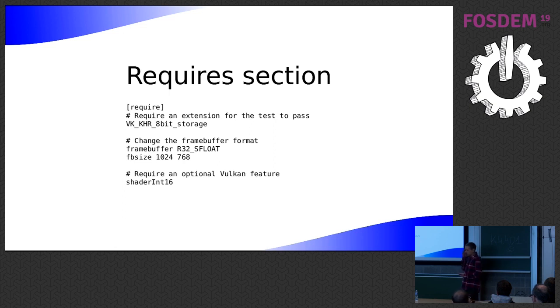But also on Vulcan, as I'm sure you know, you have to, if you want to use an extension, not only do you have to check for it, you have to also enable it. So VK runner will do that as well. And unlike GL, as well as extensions, Vulcan has features. So even things that are in core, a lot of things are optional. So there's a struct to enable, to check for and enable features.